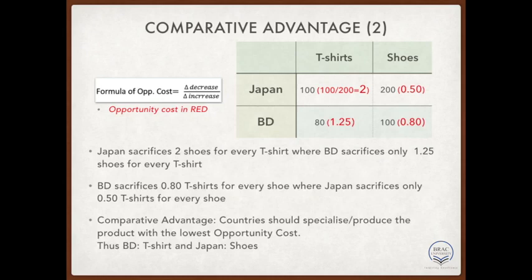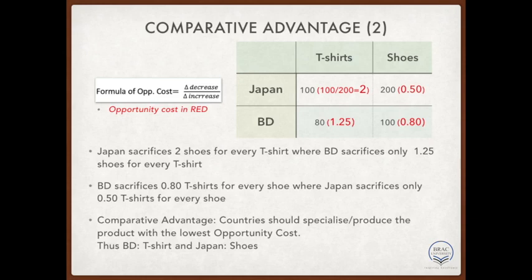Now let's take a look at this more formally with an example and develop a concrete understanding of the theory. Let's consider two countries, Bangladesh and Japan, and imagine both produce only two goods: t-shirts and shoes, as you can see on the table on this slide. Japan can produce 100 t-shirts or 200 shoes using all its resources, and for Bangladesh it's 80 t-shirts or just 100 shoes using all its resources.